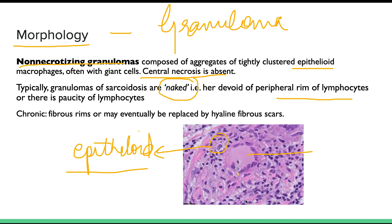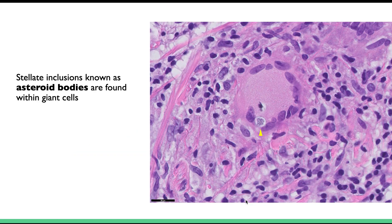When the disease goes into the chronic phase, these granulomas are replaced by hyaline fibrous scars, as fibrosis is also ongoing in the chronic phase.